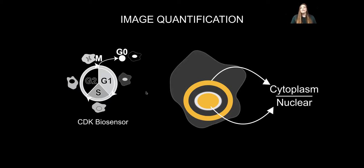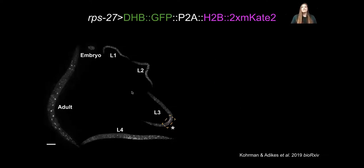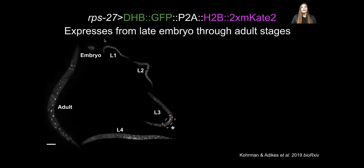We wanted to adopt this sensor for imaging in in vivo systems and started with C. elegans. C. elegans is an excellent model system: they're easily genetically manipulated, transparent, and great for live cell imaging, and we know the lineage so we can follow a cell from the embryo through the adult. We used a ribosomal promoter RPS-27 to drive DHB expression along with our histone marker, and this expresses from the late embryo through adult stages. We've tried a variety of promoters and fluorophores — please see our preprint or contact me for more details.